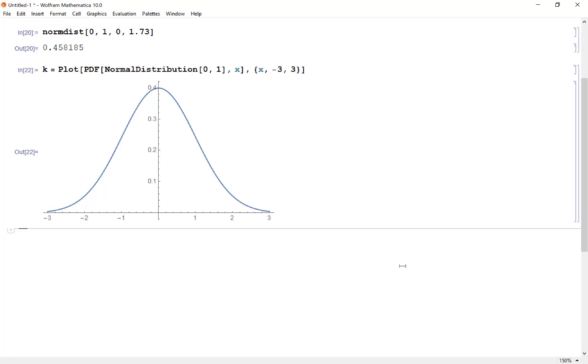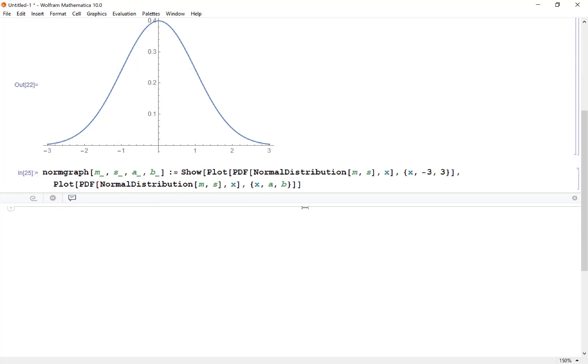So now what I want to do to get a good visualization of this is I'm going to create a new function which I call normgraph and we want the same inputs: mean, standard deviation, a beginning point and an endpoint and what I'm going to do is Show because I want to plot two different things. First I want to plot what we just calculated from negative three to three. Then I also want to plot the same thing, but this time I'm only going to plot from a to b.